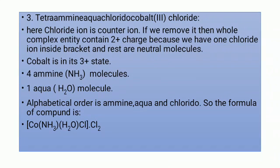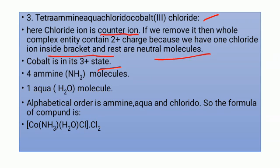The third example is tetraamine aqua chloridocobalt(III) chloride. Here the chloride ion is the counter ion. If we remove it, the whole complex entity contains a 2+ charge because we have 1 chloride ion inside the bracket, and the rest are neutral molecules. Cobalt is in its 3+ state. Inside the bracket, 4 amine molecules and 1 aqua molecule (water) are present. The alphabetical order of ligands is: amine, aqua, and chlorido.